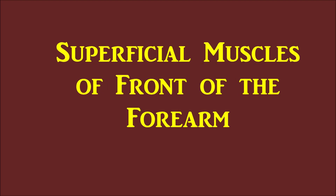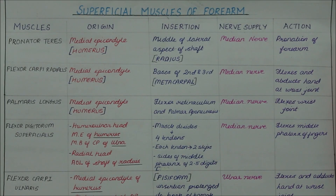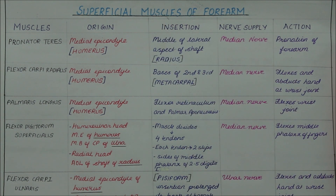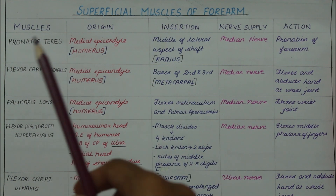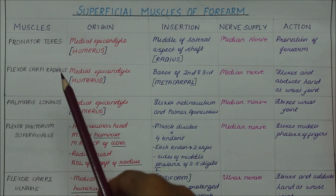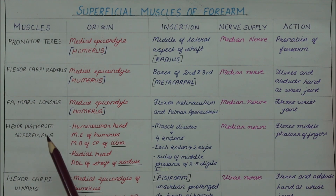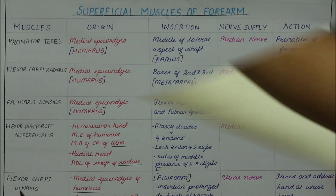Hello friends and welcome to my channel. Today we will be learning about the origin, insertion, nerve supply and action of the muscles of the body. Now let's look at the superficial muscles of the anterior aspect of the forearm. To begin with, we have five muscles: the pronator teres, the flexor carpi radialis, the palmaris longus, the flexor digitorum superficialis, and the flexor carpi ulnaris.